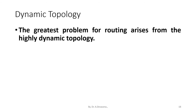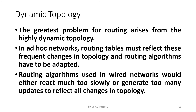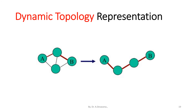The fourth difference is dynamic topology. The greatest problem for routing arises from the highly dynamic topology. In ad hoc networks, routing tables must reflect these frequent changes in topology and routing algorithms have to be adapted. Routing algorithms used in wired networks would either react much too slowly or generate too many updates to reflect all changes in topology. Here we have four nodes whose topology may change between the two scenarios, as indicated in the diagram.